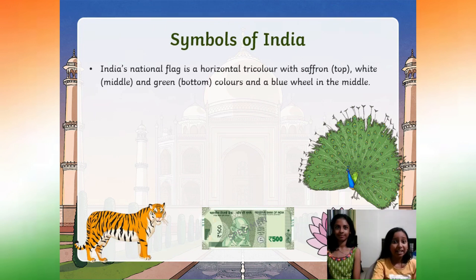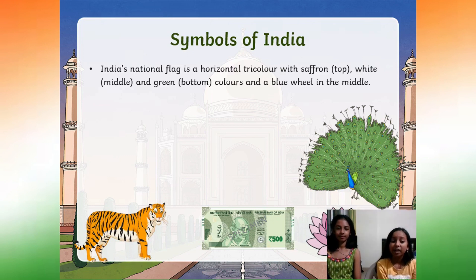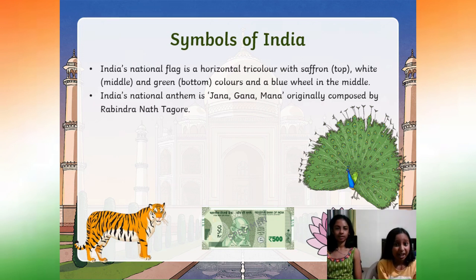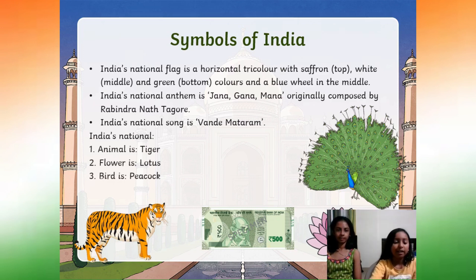Symbols of India. India's national flag is a horizontal tricolour with saffron on the top, white in the middle, and green on the bottom, with a blue wheel in the middle. The blue wheel has 24 spokes representing the 24 hours, and some people think it represents 24 human qualities. India's national anthem is Jana Gana Mana, originally composed by Rabindranath Tagore. India's national song is Vande Mataram. India's national animal is the tiger, national flower is the lotus, national bird is the peacock, and national currency is the rupee.